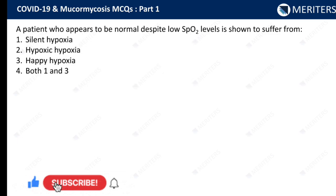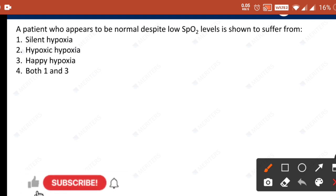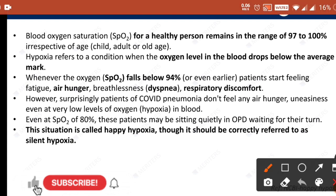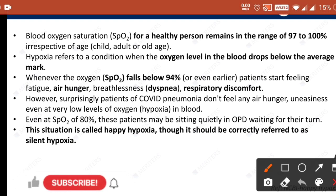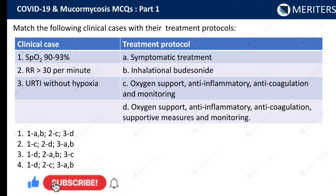A patient who appears to be normal despite low SpO2 levels is shown to suffer from — silent hypoxia, hypoxic hypoxia, happy hypoxia, or both silent and happy hypoxia? Hypoxia is an important topic here. The points which are important related to hypoxia are enlisted on this slide, so please go through it.